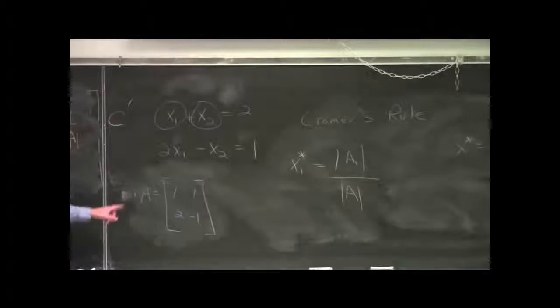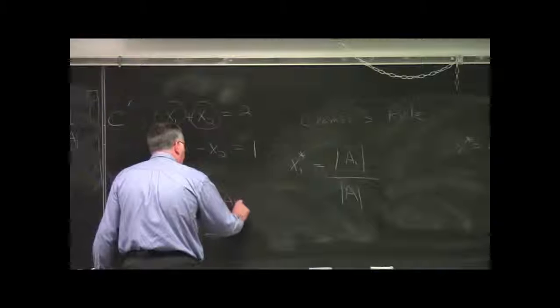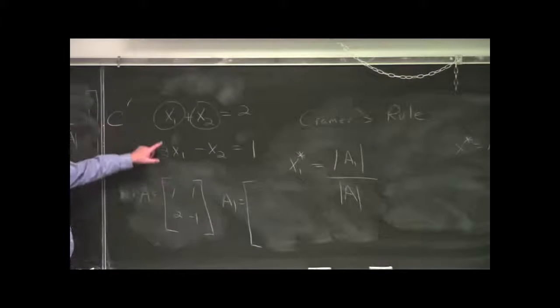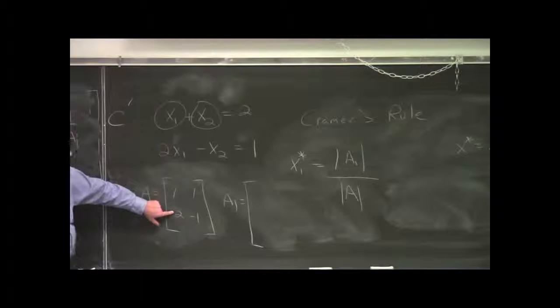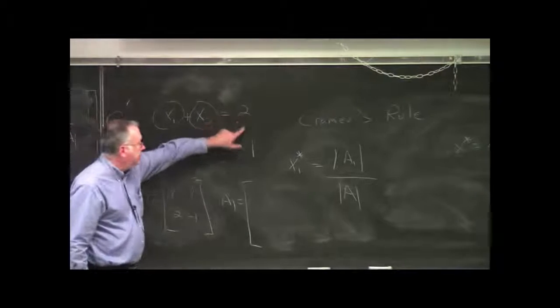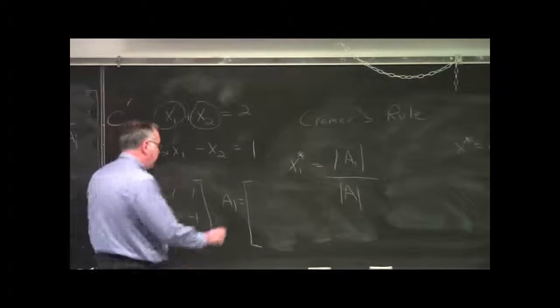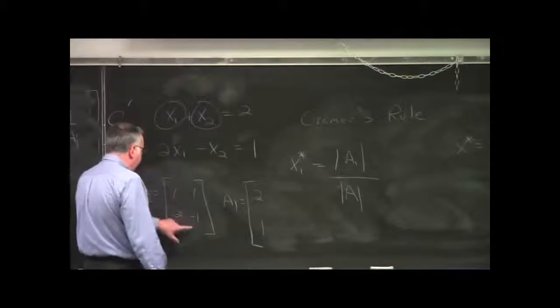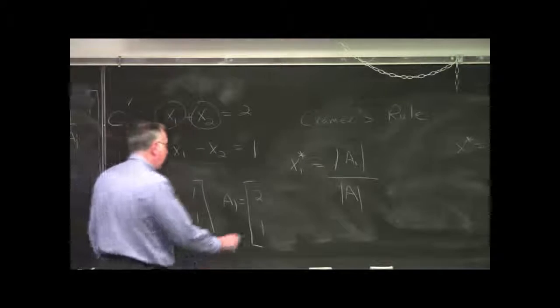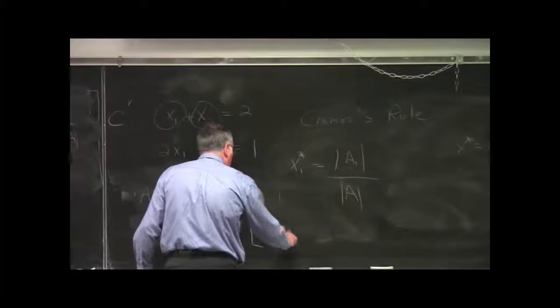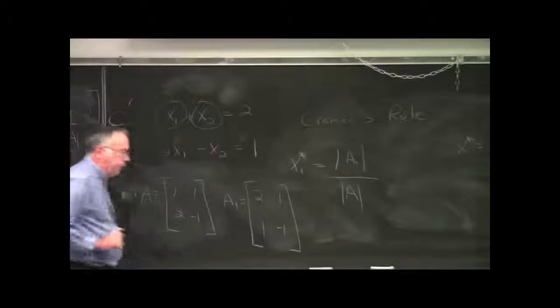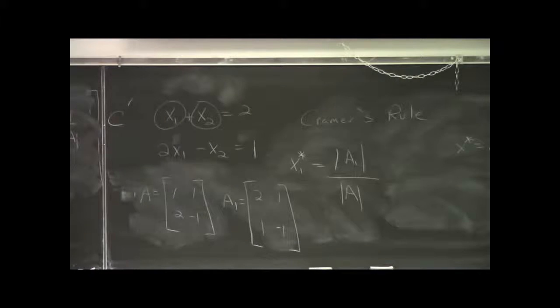A sub 1 is just this matrix. It's the A matrix with the first column replaced with the D vector. Here is the D vector over here. So if you just replace this first column with 2, 1, and then leave the rest of A the same: 1, minus 1. Because you're replacing the first column, that's why you put that 1 subscript on A. It'll help you remember.